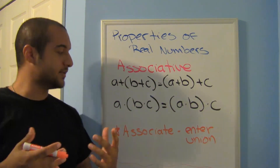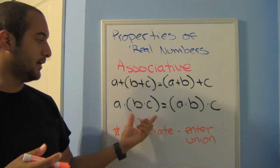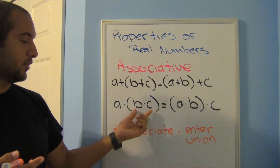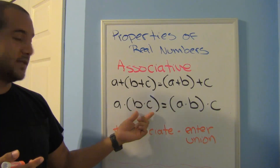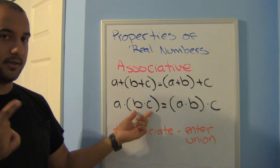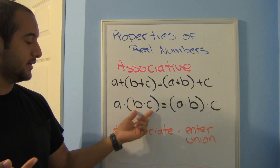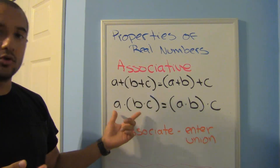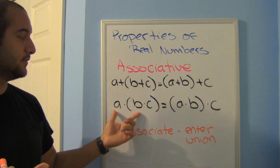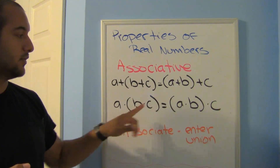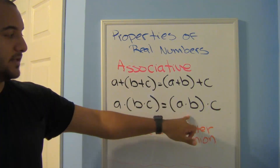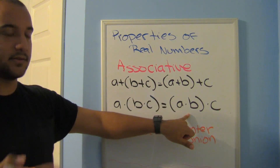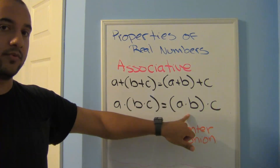This is actually helpful if you're solving something mentally. If you're multiplying but you don't know what b and c are, yet you do know what a and b are, you can do those first. Since both groupings are equal, it's a legal move in math.